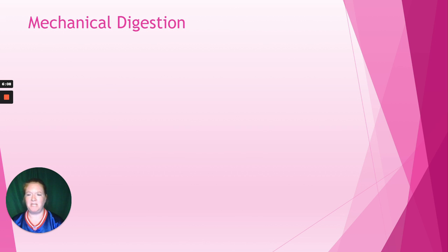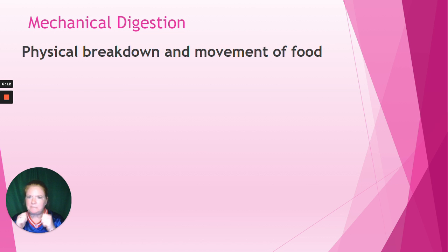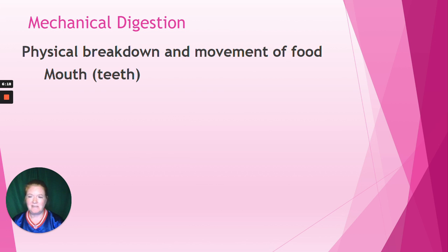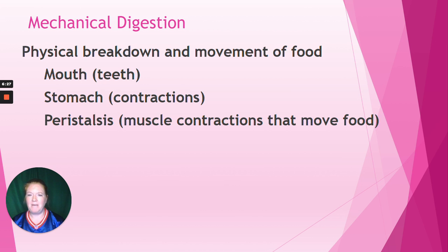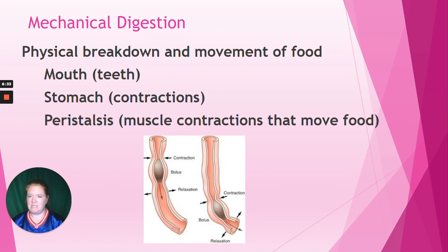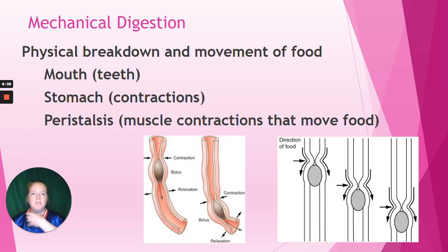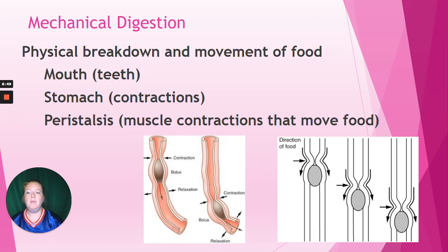Now let's talk about digestion. There's mechanical digestion — the physical breakdown and movement of food. It happens in our mouth with our teeth and tongue moving food around, and in our stomach when it squeezes and contracts. It also happens in a process called peristalsis, which is muscular contractions that move food — the tube squeezes and the food moves down, repeatedly along the tract. It happens in our esophagus to move food rapidly into our stomach, and occurs throughout the entire digestive tract.